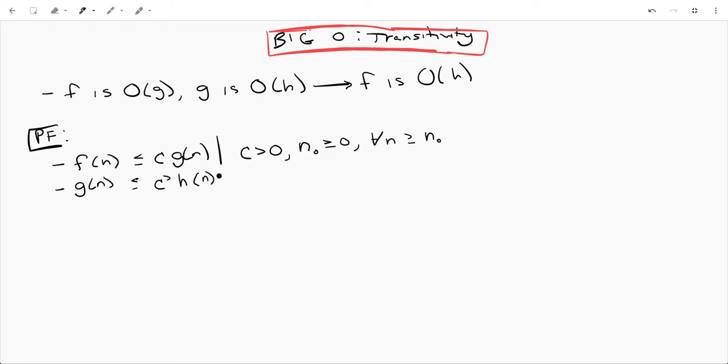And then c prime h of n such that c prime, again, might be the same as c, but we aren't sure. And then we say the same thing for n naught prime, might be the same thing as this one, but we don't know. That's going to be greater than or equal to zero as well. All n are going to be greater than or equal to that.